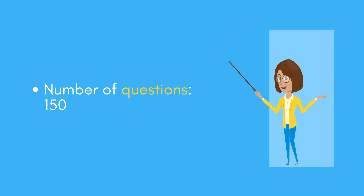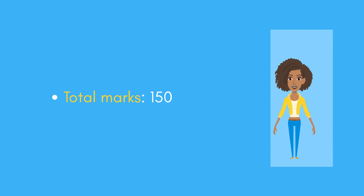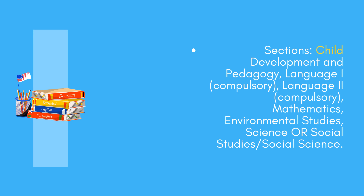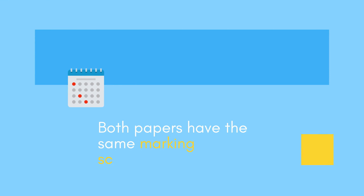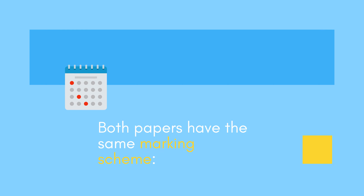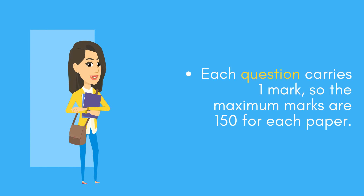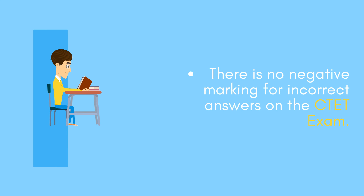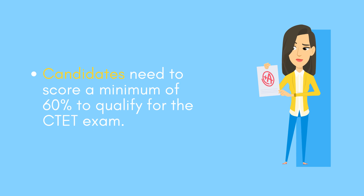The exam duration for both Paper 1 and Paper 2 is 2.5 hours, with 150 questions and a total of 150 marks. Sections include Child Development and Pedagogy, Language I (compulsory), Language II (compulsory), Mathematics, Environmental Studies, Science, or Social Studies/Social Science. Each question carries one mark and there is no negative marking. Candidates need to score a minimum of 60 percent to qualify.